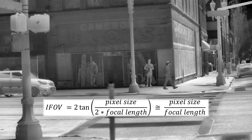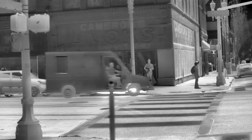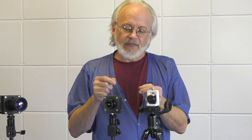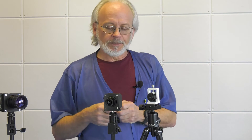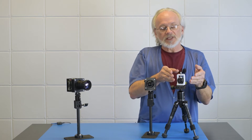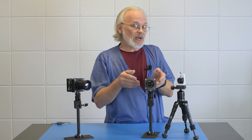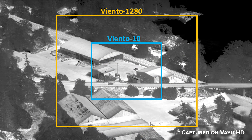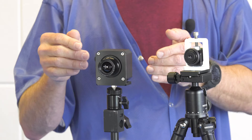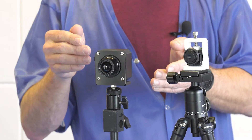How would one increase the field of view of an infrared imaging system? There are two knobs we can turn to adjust this: one is the size of the detector array in the system, and the other is the focal length of the lens. Let's talk about detector array size first. Assuming the same focal length lens on two cameras — this is the Viento 10, which has a 640-pixel array of 10-micron pixels, and this is the Viento 1280, which has the same 10-micron pixels but twice as many pixels in width: 1280 pixels. So its detector array is twice as large as the Viento 10.